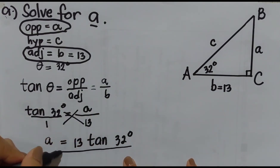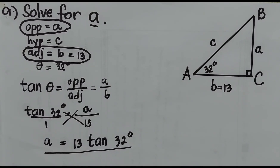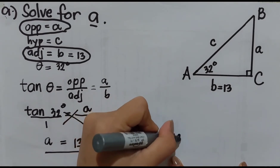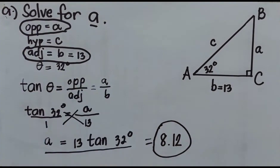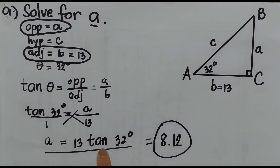The result is that the length of side A is approximately 8.12. If you do not have a calculator, the answer can be expressed as 13 times tan 32 degrees.